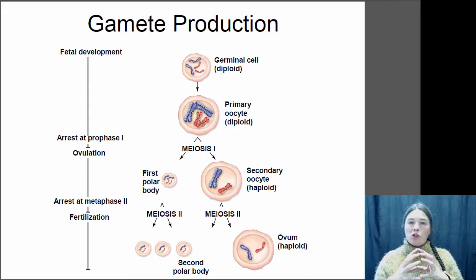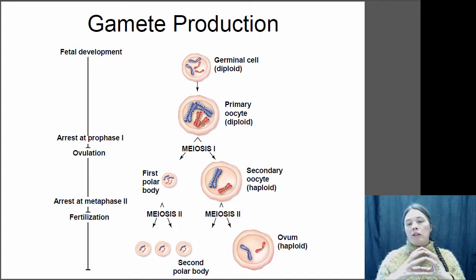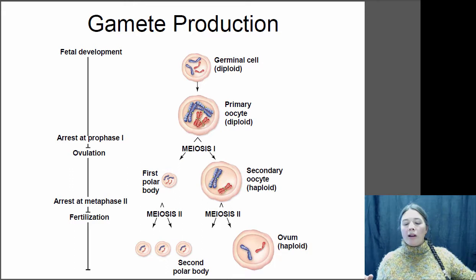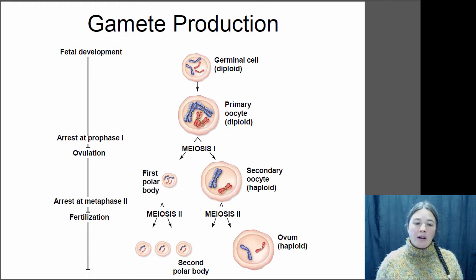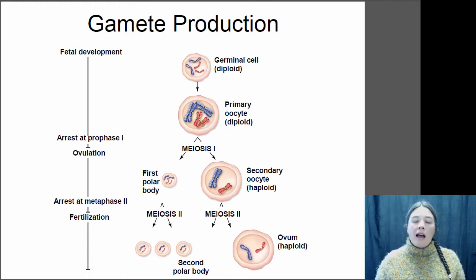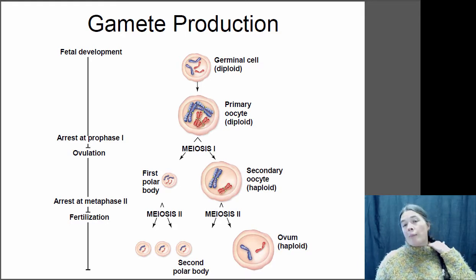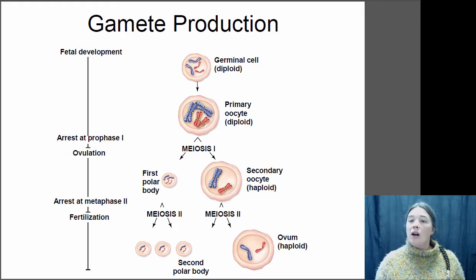The egg has to be larger and needs to contain more resources for the developing embryo. The polar bodies are basically just getting rid of the excess genetic material, while the egg itself gets all the mitochondria and everything it needs. In humans, the second stage of meiosis happens immediately prior to fertilization.